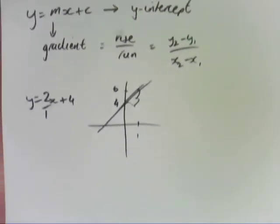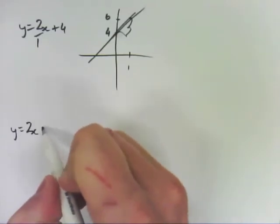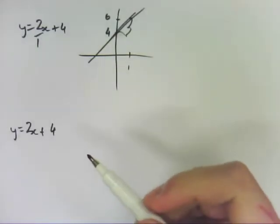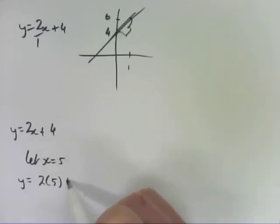Now this exercise also asks you to do other things with those, so y equals 2x plus 4, we'll keep as our equation. Some of the questions you might ask is what's y when x is 5? So we let x equal 5, y equals 2 times 5 plus 4, y equals 14.